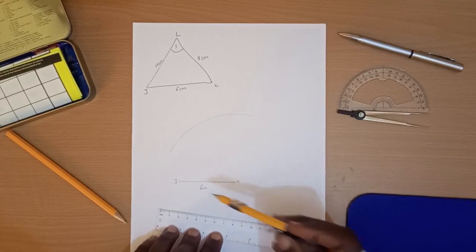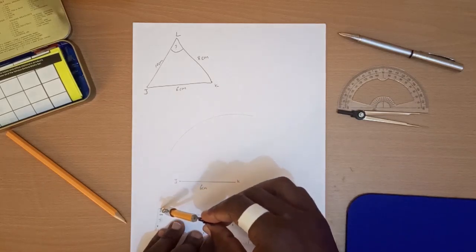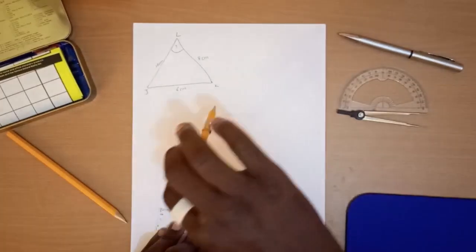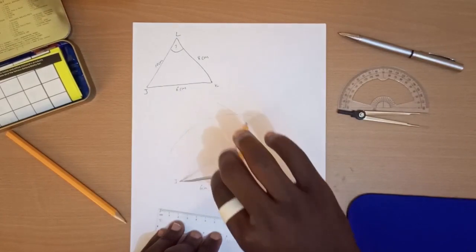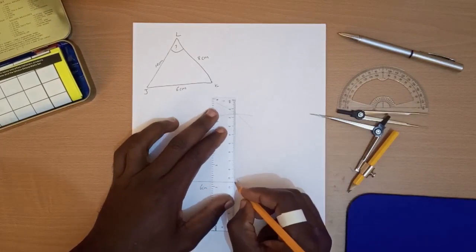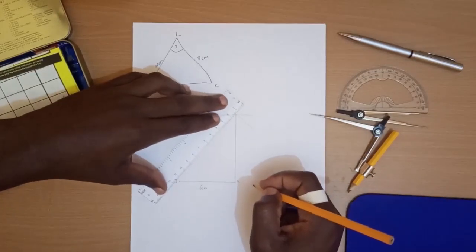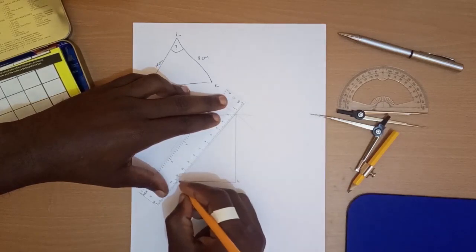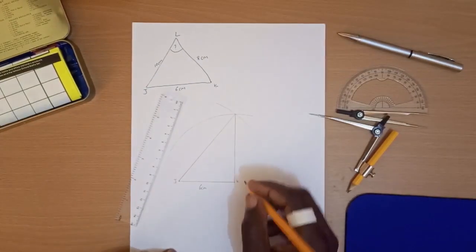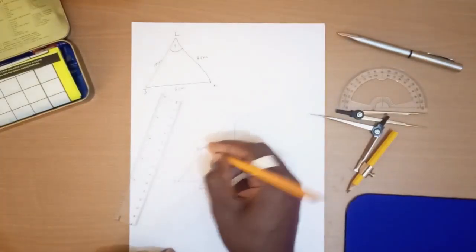Then JLK is equal to 10 cm. So let's measure 10 cm using your compass. That's 10 cm. Let's connect. 8 centimeters, 10 centimeters.